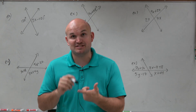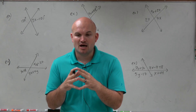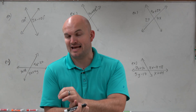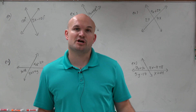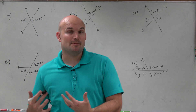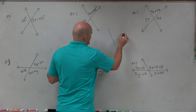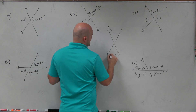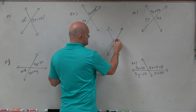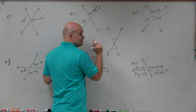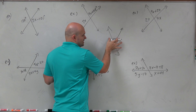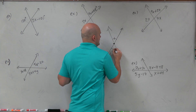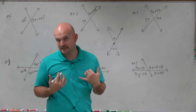First of all, we create vertical angles, because vertical angles are angles that are on opposite ends of the intersection of two lines. They don't have any adjacent sides, but they share a common vertex. Vertical angles are important because we know that vertical angles are equal in measurement.